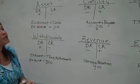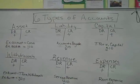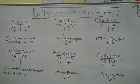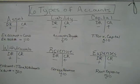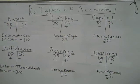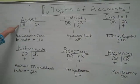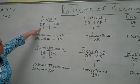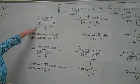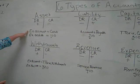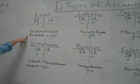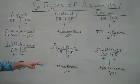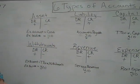So when you're asked on the first big test — chapters one through four — to identify the six types of accounts, to identify the debit and credit side, which side is a plus, which side is a minus, and give an example account number, remember it should resemble something like this.